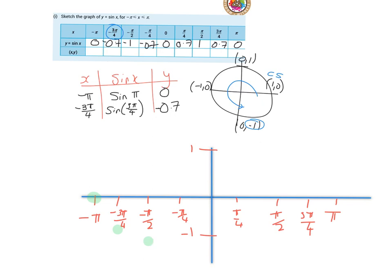This is going to be 0.7. This is going to be 0.